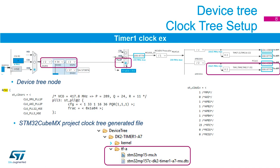Here you can see the Timer 1 clock configuration, which we'll be using later. It's coming from the HSE, and you can see all the PLLs for dividing. Timer 1 is running from PLL3P. The Cortex M4 is running at full speed — 209 MHz — and Timer 1 is running at half of core speed, divided by two for part of it, with another section running at full speed. When you build the project you can see the code configuration with all the PLLs, and a new DTS file will appear in the TFA folder.